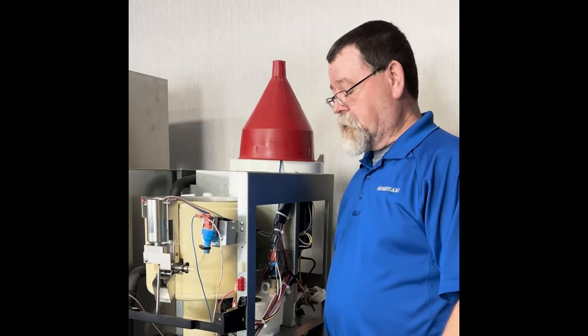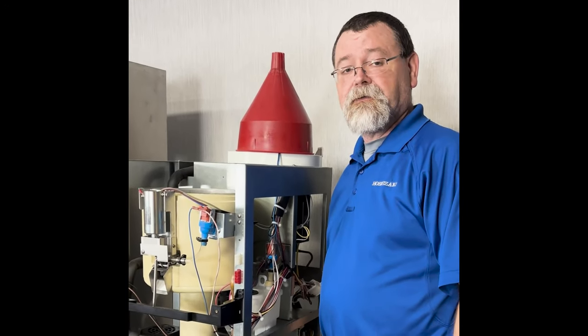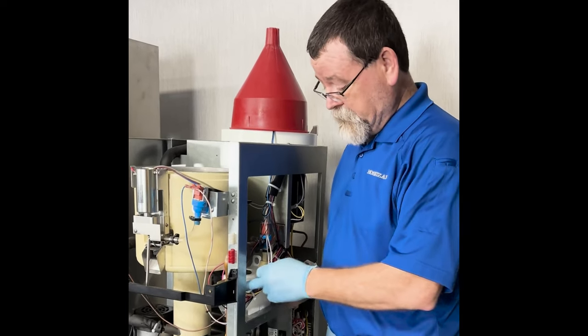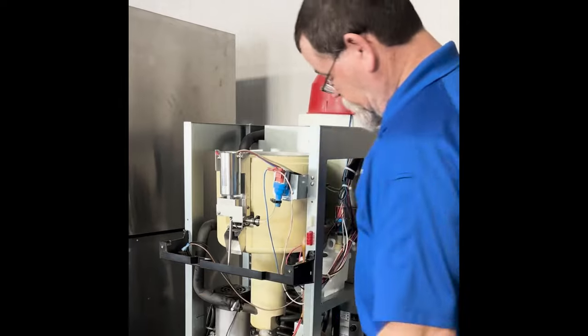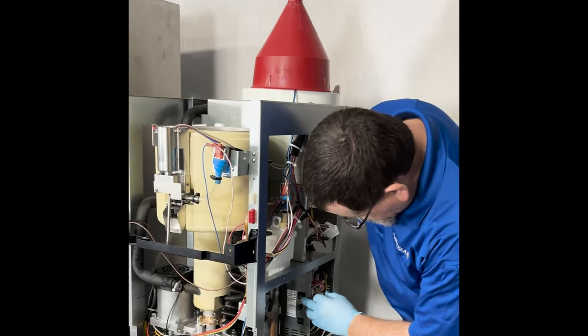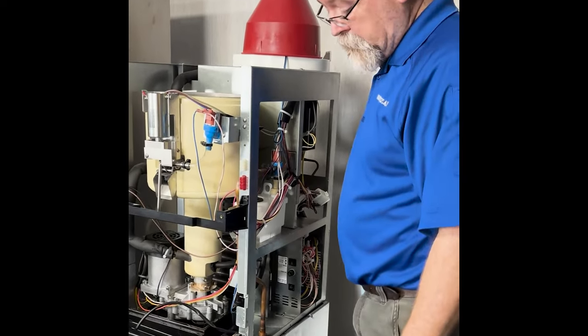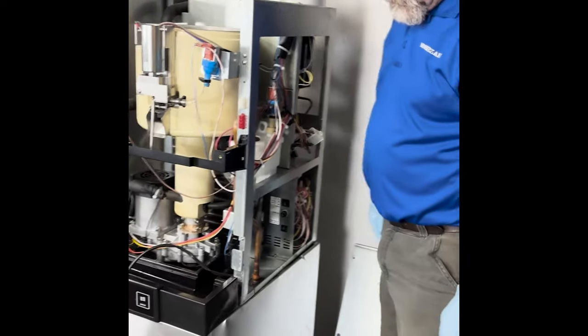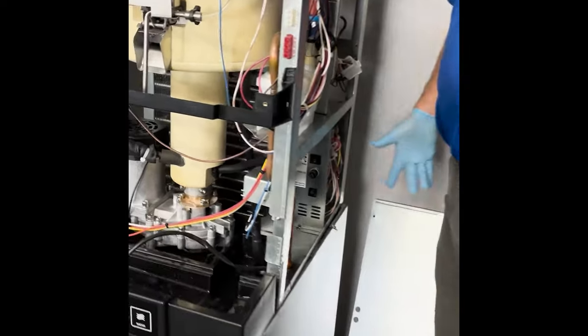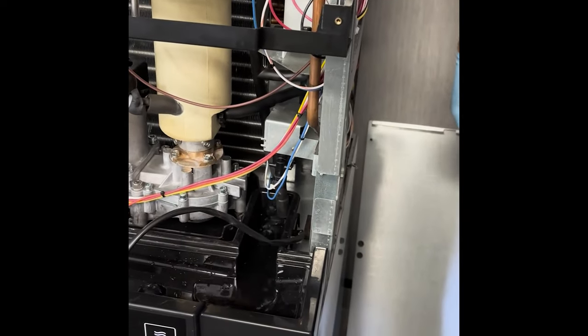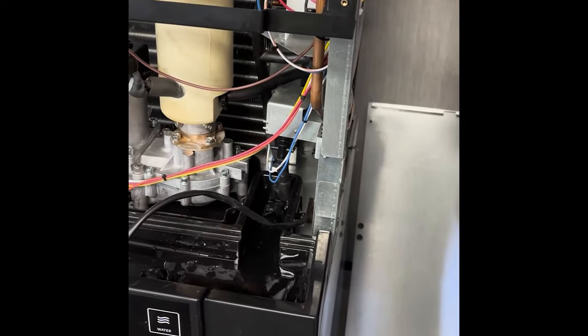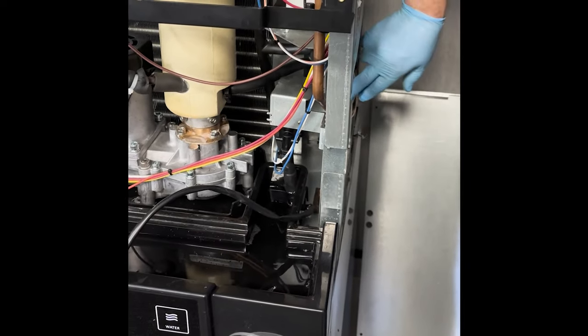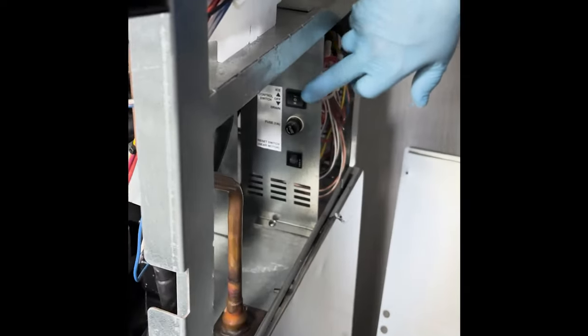Now we're ready to add our scale-away solution to the evaporator. Before we do that, we need to make sure the reservoir is empty. Turn the power on to the unit. Put the unit in drain. There is a slight delay. You'll want to watch here in the drain pan, make sure the drain valve opens. Wait until your water stops running out of your reservoir. Once your water is out of your reservoir, turn the power back off to the unit.